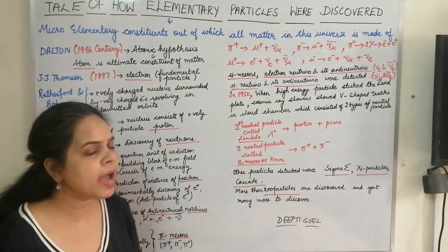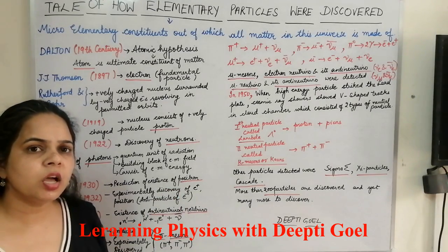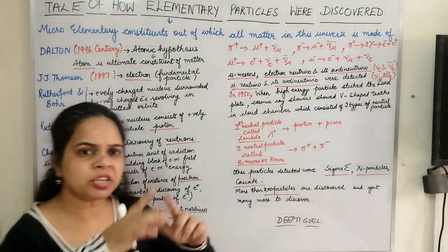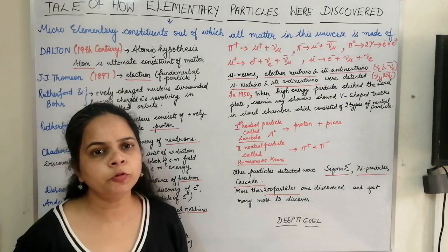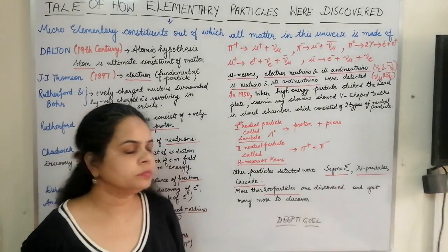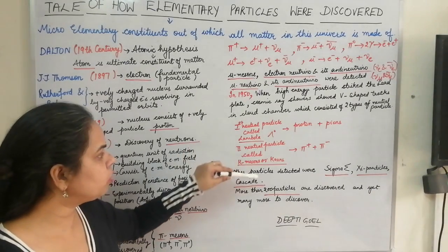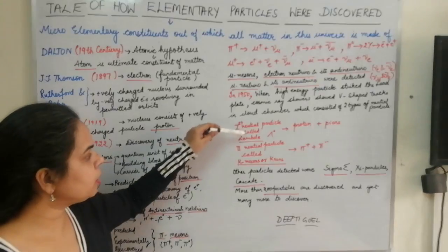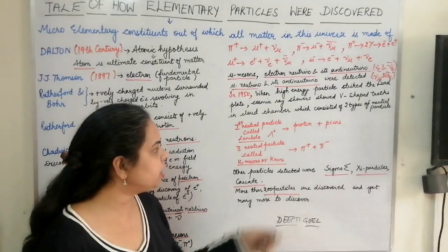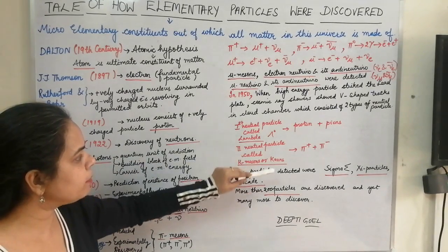In 1950, while studying cosmic ray showers, researchers found that high-energy particles striking a lead plate produced tracks recorded in a cloud chamber. They observed V-shaped tracks corresponding to two neutral particles. The first neutral particle was called lambda, which decayed into a proton and a pion. The second V-track corresponded to K mesons or kaons, which decayed into pi positive and pi negative mesons. So two more particles — lambda and K mesons — were detected.